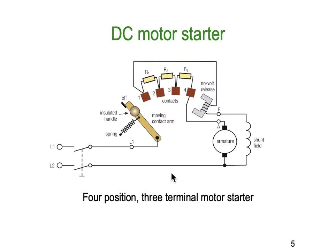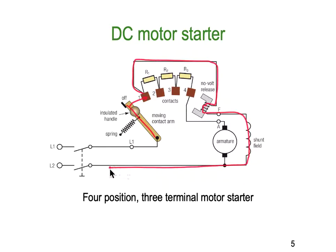DC motor starters. This is a 4-position, 3-terminal motor starter. Basically, you have a lever arm connecting the supply to the armature. When we move the arm across to the first position, we're going to have current through this release catch gadget into the shunt field and back to the supply. We're also going to have current feeding to the armature, but look how many resistors it has to loop through — all three of these resistors. These are reasonably large wattage resistors, and we're simply dropping the voltage to the armature so we have less starting current.